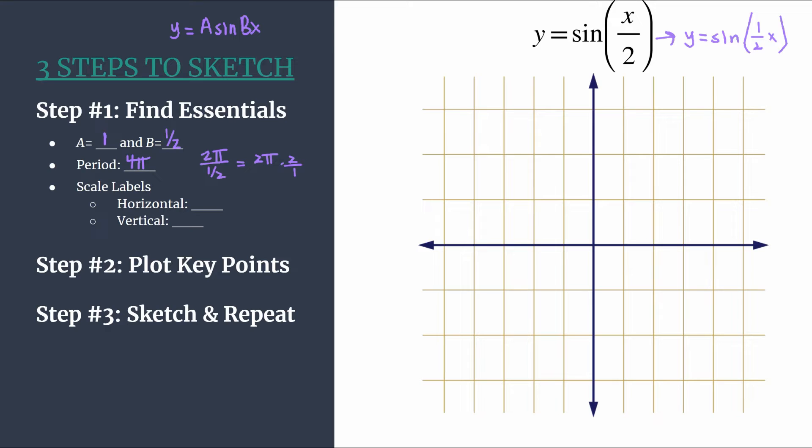Final thing for essential information, let's find our scale labels. What should we be labeling our tick marks? For our horizontal scale, we take our period and we divide by 4, and we use that to label our horizontal tick marks. So we're going to do 4 pi divided by 4. Well, that's just pi.